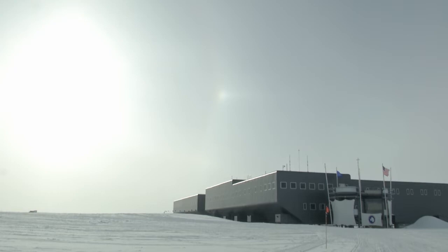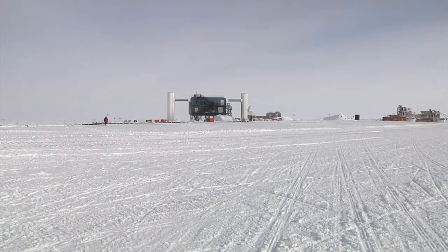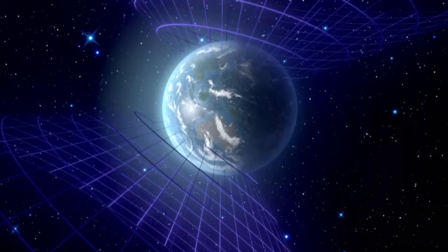IceCube is searching for neutrinos that have flown through the Earth. Ones that entered the northern hemisphere. Ones that entered the southern hemisphere are looked for in the Mediterranean, for only neutrinos can fly through the Earth.